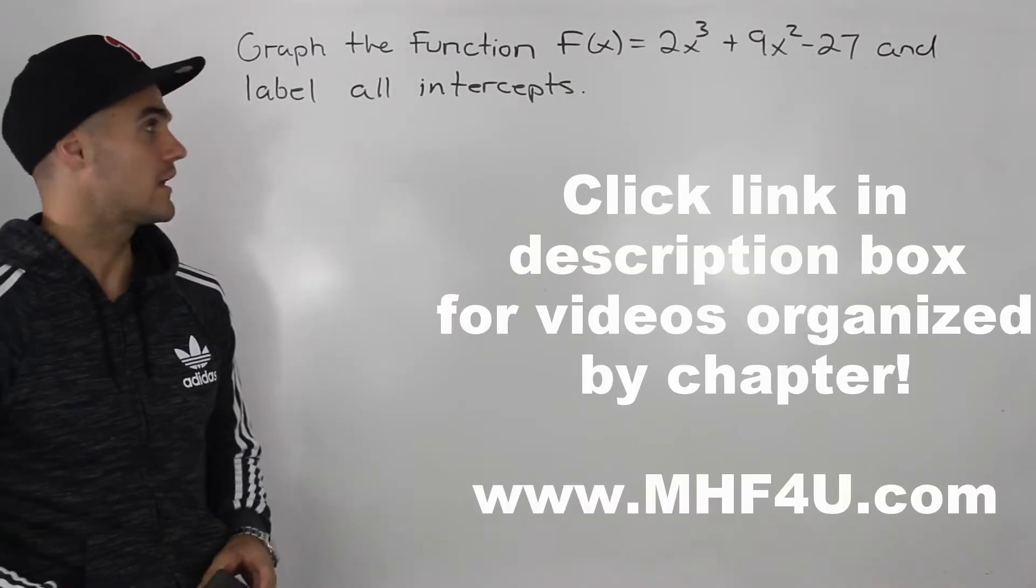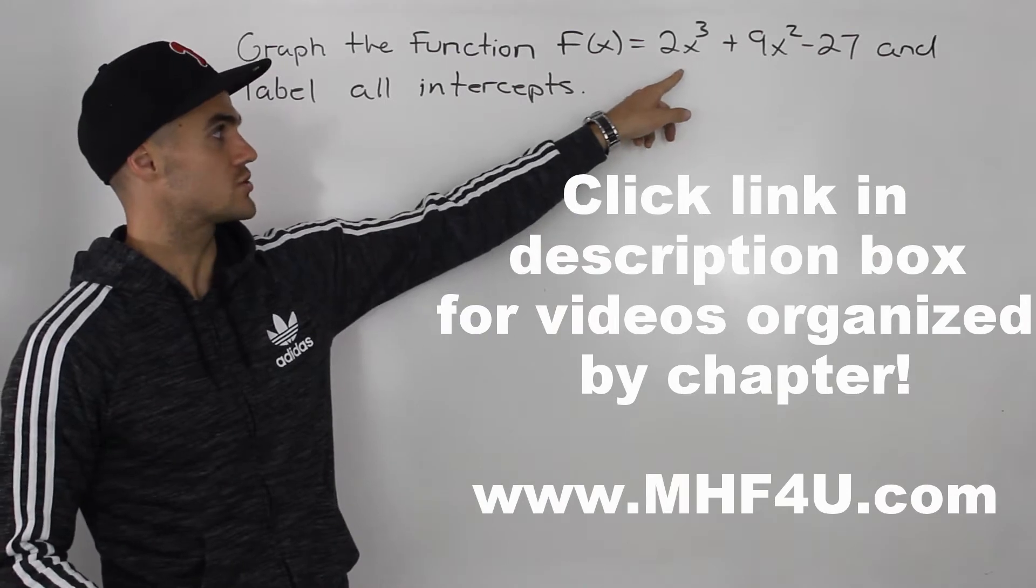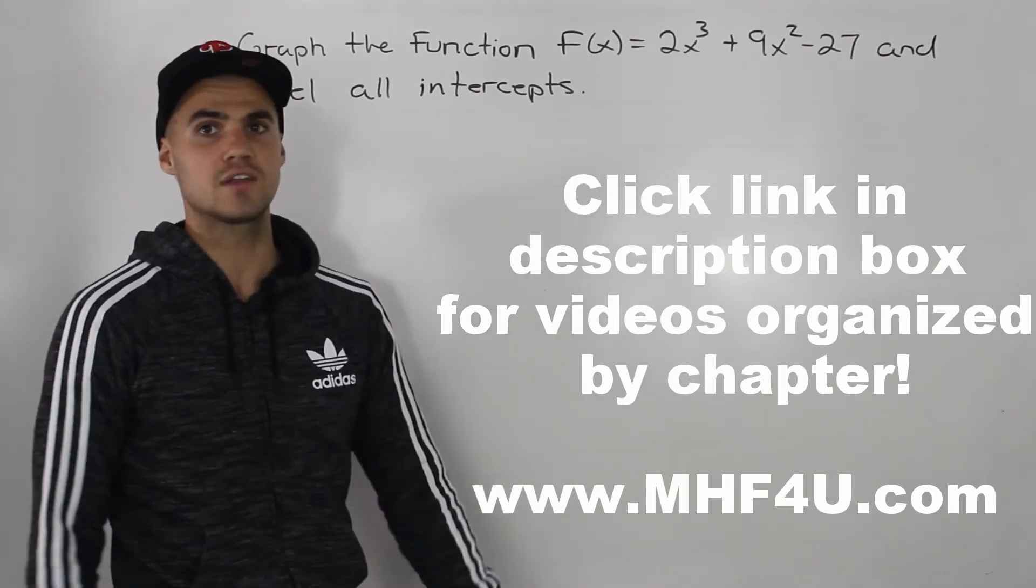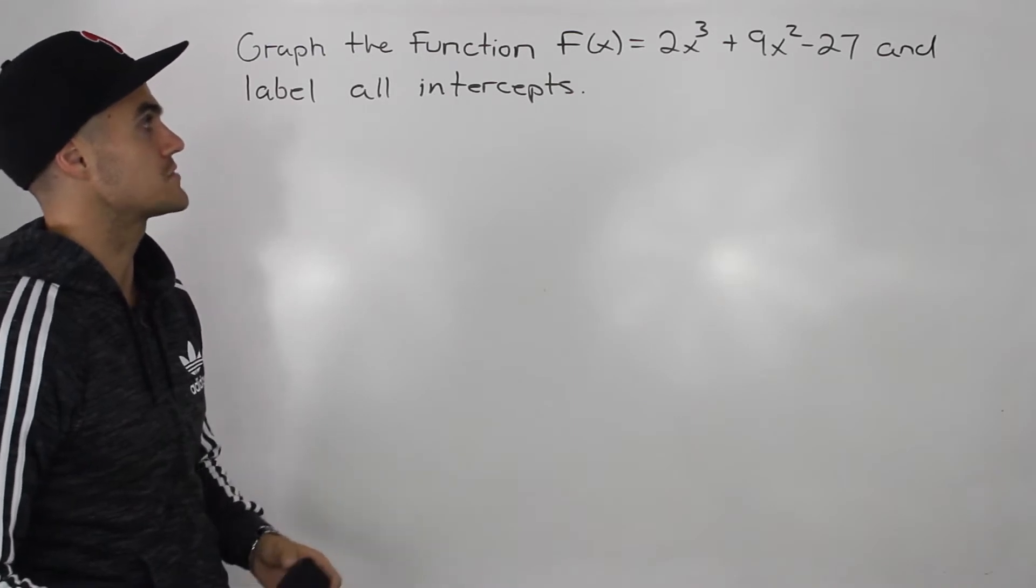Welcome back everybody, Patrick here. In this question, we have to take this cubic function 2x³ + 9x² - 27, and we have to graph it and label all the intercepts.